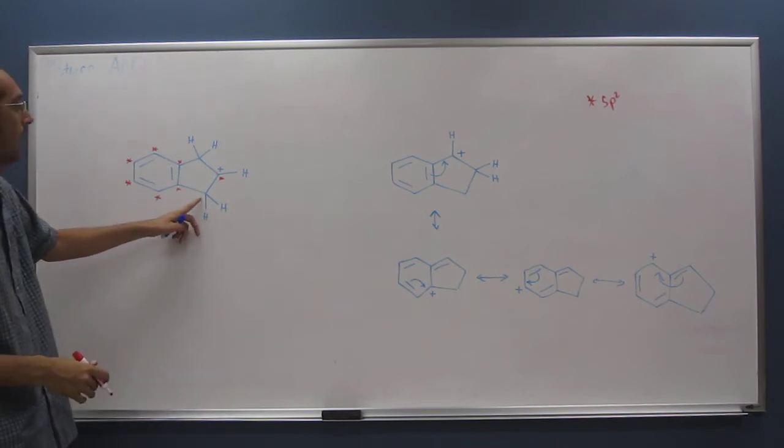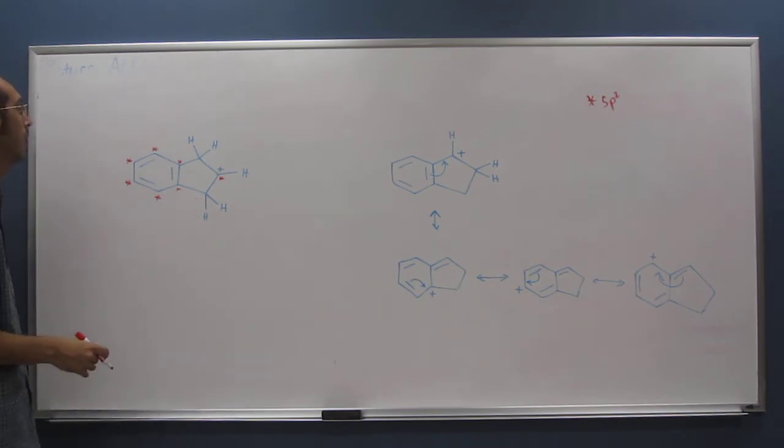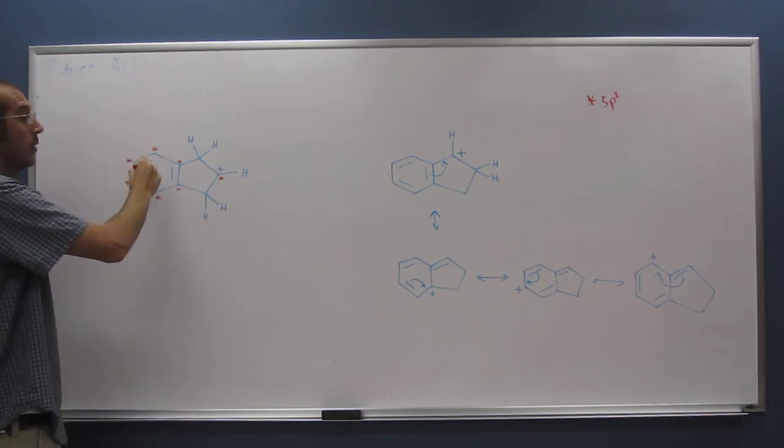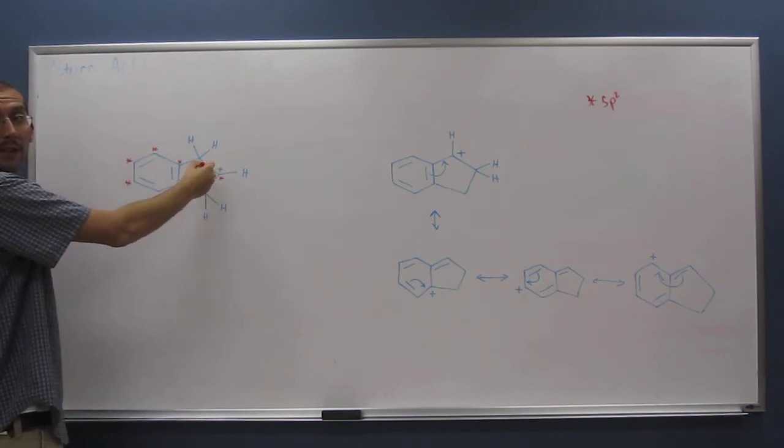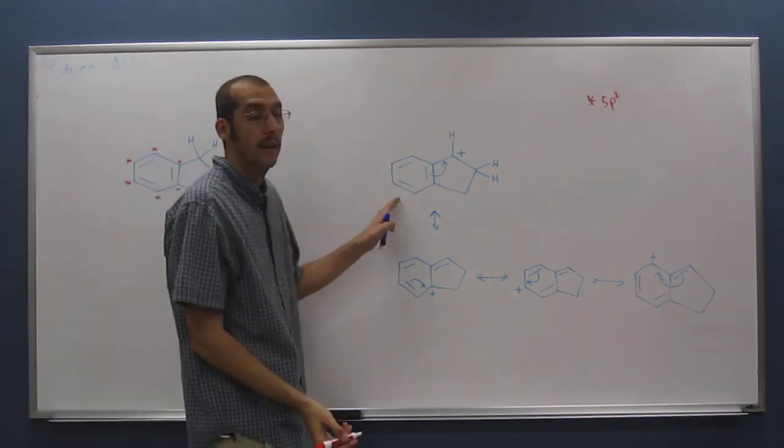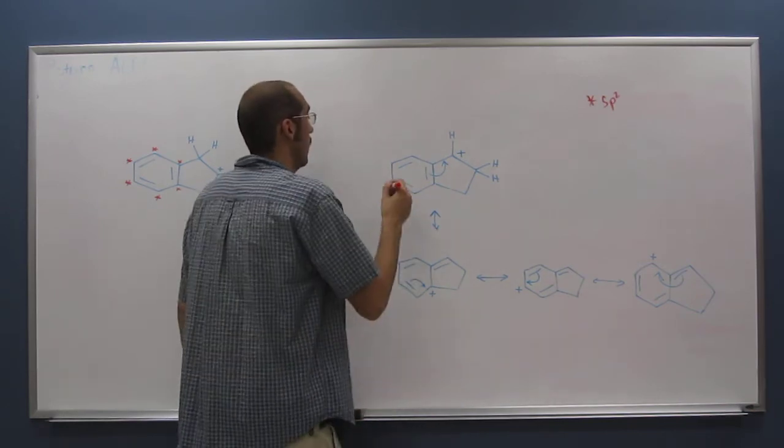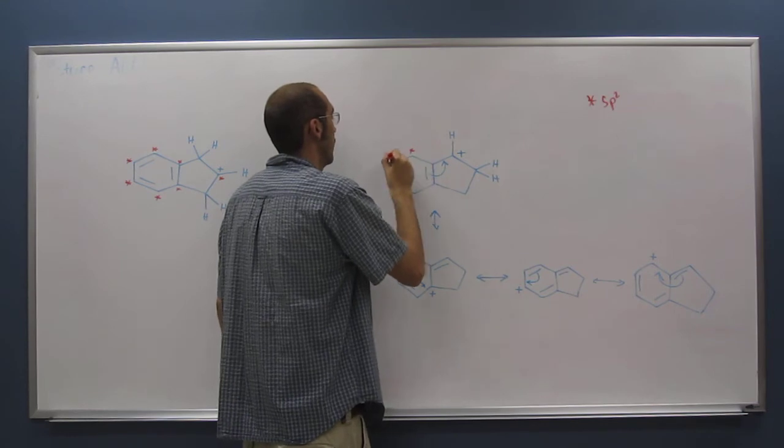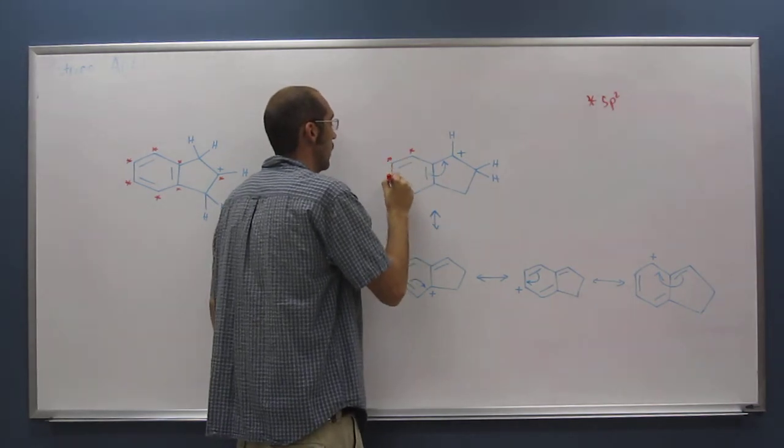And what about this one here? No. So you notice we have this continuous ring of sp2 carbons, and we have this one that's stuck out over by itself, where there's this carbon in between. So here, let's do the same sort of analysis. Of course, all of these are going to be the same, so let's just mark all those as sp2 carbon.